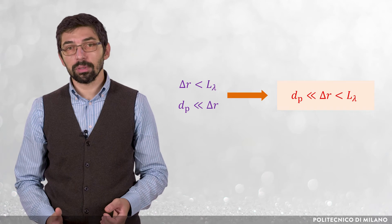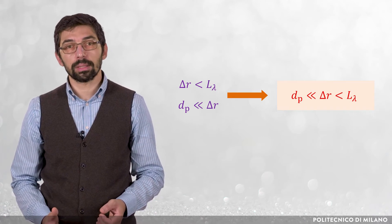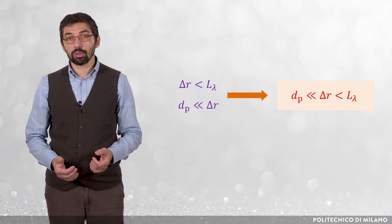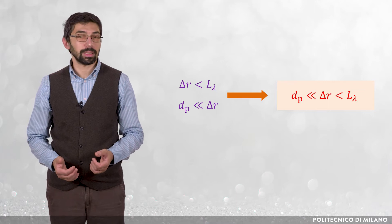Actually, it is not simple to evaluate L small lambda and tau small lambda for a particle-laden flow, but we can imagine that these quantities are very small in most flows of industrial interest.